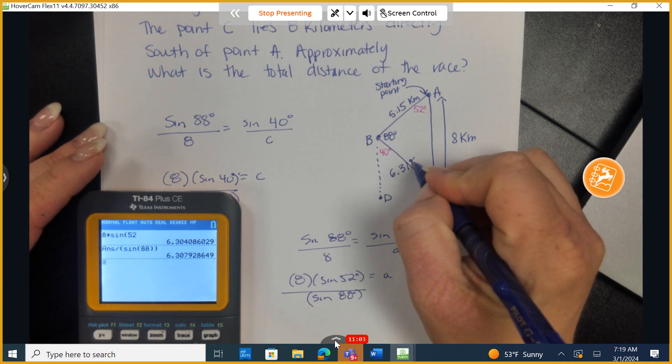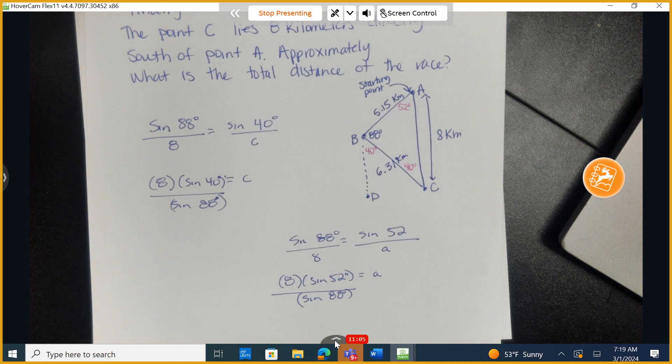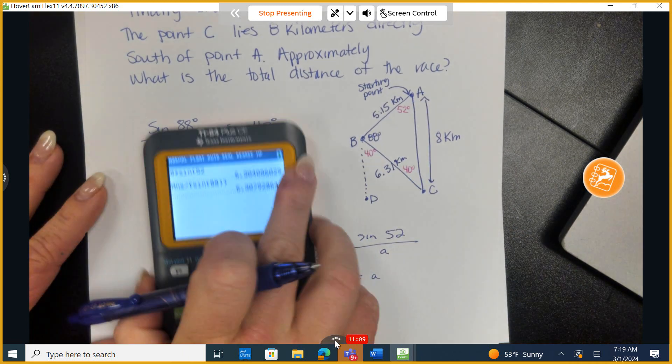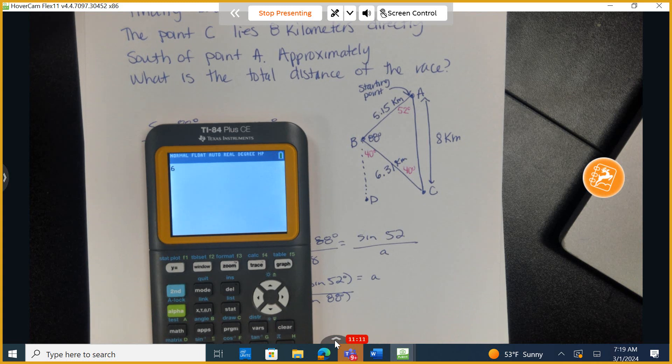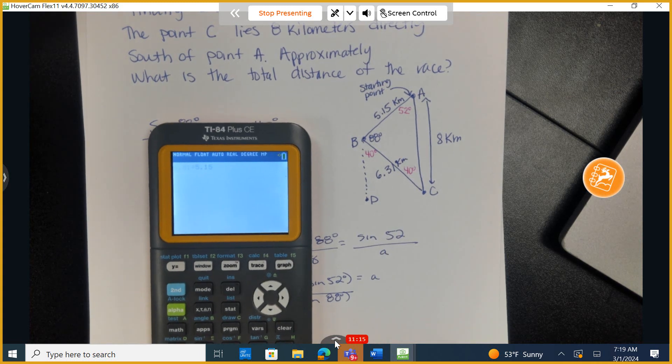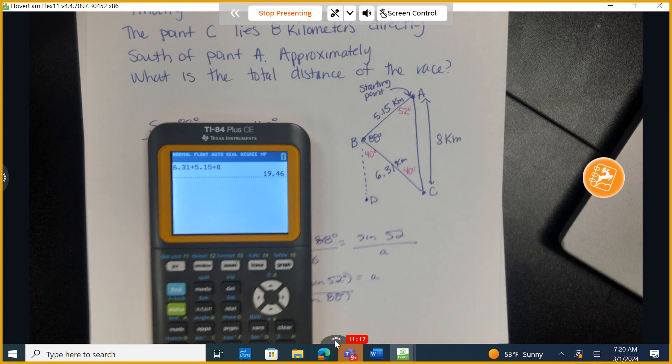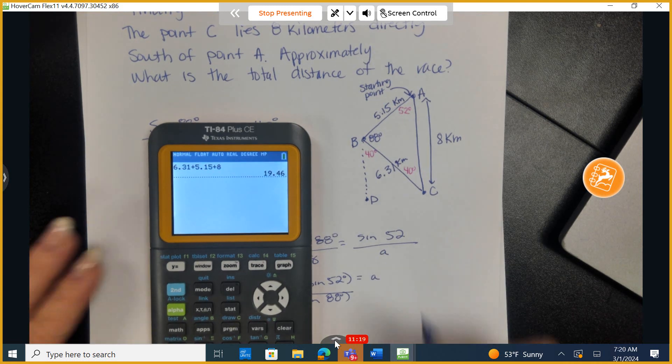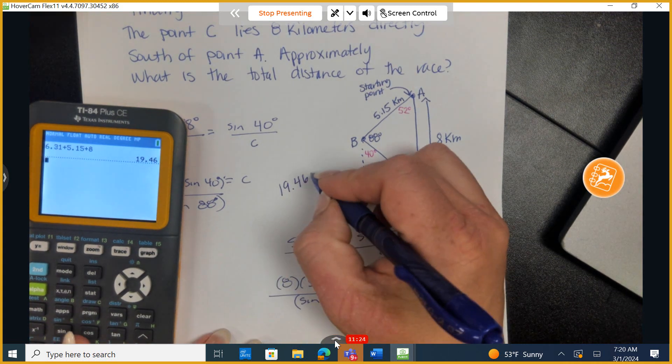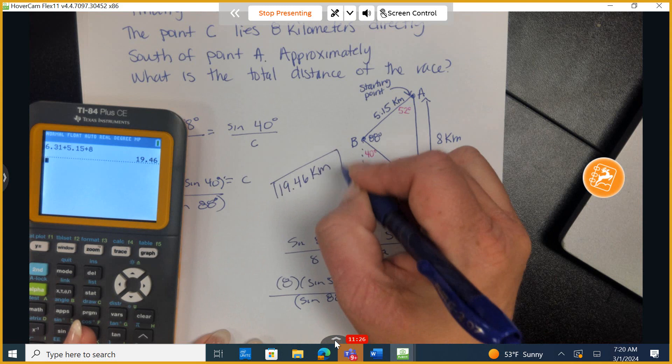And my question is approximately what is the total distance of the race? Let's add up these three lengths. So I have 6.31 plus 5.15 plus 8. And I have approximately 19.46. Approximately 19.46. Remember, we do need to add on to that what is the unit. It is kilometers.